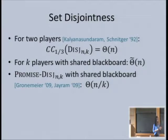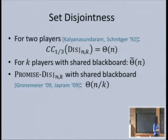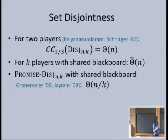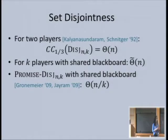For promised set disjointness—where either all sets intersect in exactly one place or every two sets are disjoint—there have been a series of works leading to a tight lower bound of n/k. This has applications in streaming. The tight lower bound was originally proven by Gronmeier, and the version closer to what I'll do today is a note by Jayram called 'Hellinger Distance Strikes Back.' We'll be using similar techniques.